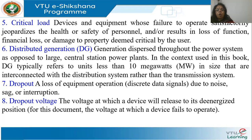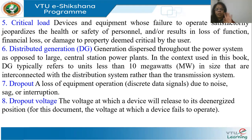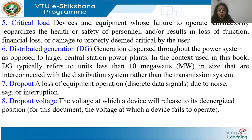Dropout is a loss of equipment operation due to noise, sag, or interruption — the equipment drops out of service because of a power quality disturbance. Dropout voltage is the voltage at which a device will be de-energized. For example, a relay has a threshold below which it will not work; a motor has a lowest voltage below which it will not operate. That is the dropout voltage — the voltage at which a device releases to its de-energized position.